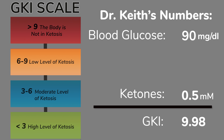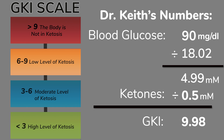Those numbers would equate to 9.98 on the glucose ketone index, which would mean I was not even close to being in a fat-burning state — and yet I was obviously burning fat during those periods. The calculation is: 90 milligrams divided by 18.02 gives 4.99 millimolar glucose, divided by 0.5 ketones, equals 9.98.